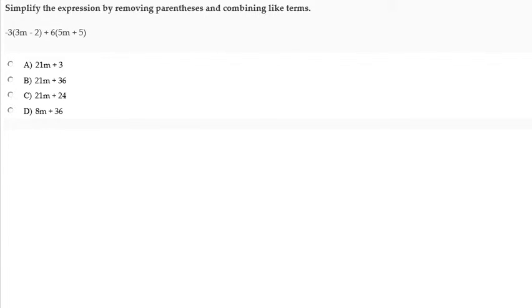Simplify the expression by removing parentheses and combining like terms: negative 3 times the quantity 3m minus 2 plus 6 times the quantity 5m plus 5.